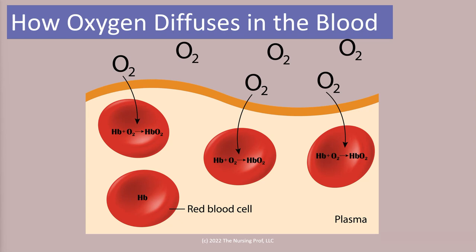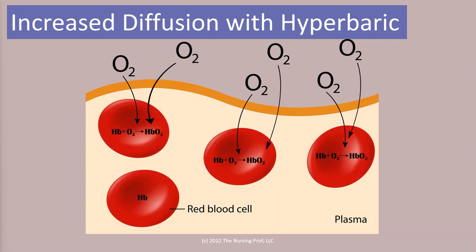Now, if we were to increase the pressure of the oxygen — that is, increase our atmospheric pressure — then more of the oxygen that gets to the lung would diffuse across into the blood and connect up with red blood cells, making more oxygen available at the tissue level.